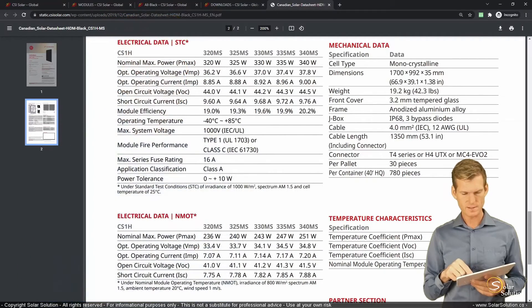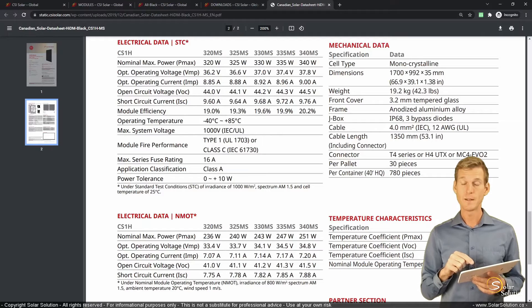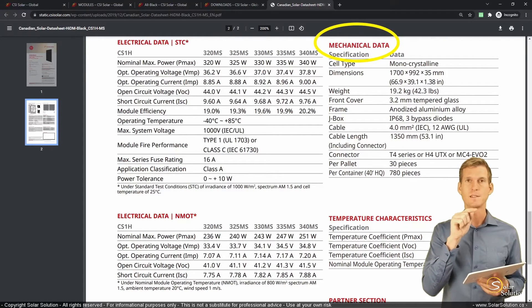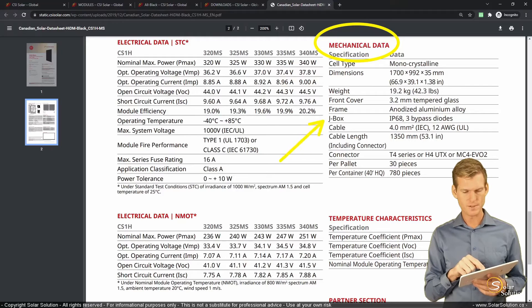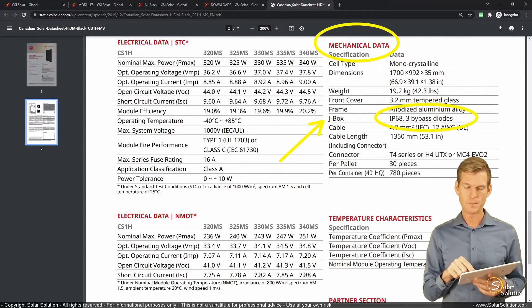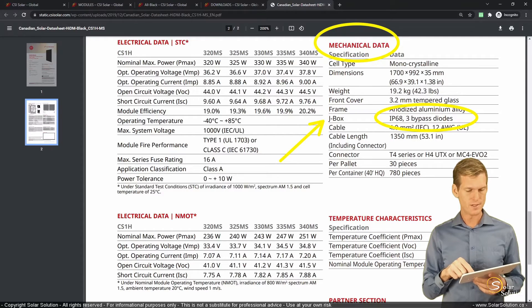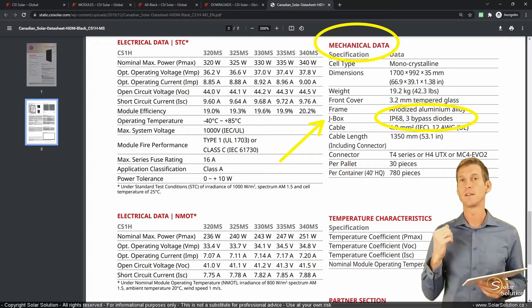But for this manufacturer, it says it on the second page of the specification sheet, in the section of mechanical data, and you're looking for, it's normally expressed in the section on the junction box. So here on the junction box, or J box, it says that it has three bypass diodes. So it doesn't tell us exactly what the internal wiring looks like, but it's safe to assume that if it's a 60-cell module and it has three bypass diodes, that is configured in the way as we just looked at before.